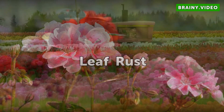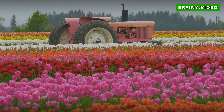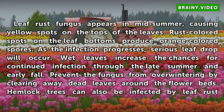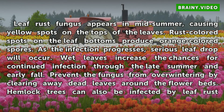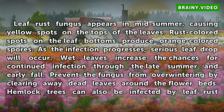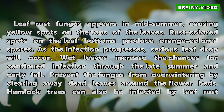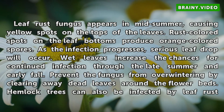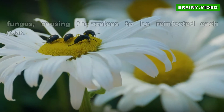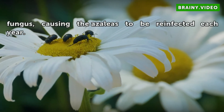Leaf rust fungus appears in mid-summer, causing yellow spots on the tops of the leaves. Rust-colored spots on the leaf bottoms produce orange-colored spores. As the infection progresses, serious leaf drop will occur. Wet leaves increase the chances for continued infection through the late summer and early fall. Prevent the fungus from overwintering by clearing away dead leaves around the flower beds. Hemlock trees can also be infected by leaf rust fungus, causing the azaleas to be reinfected each year.